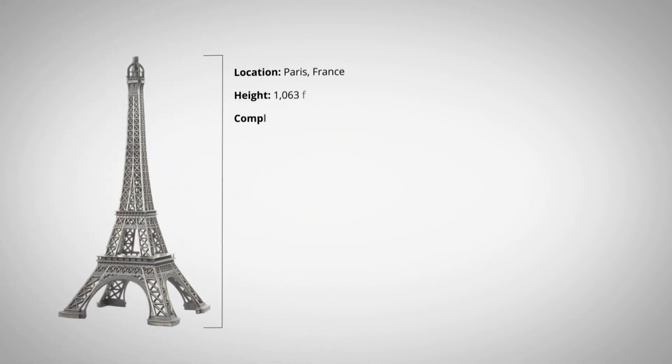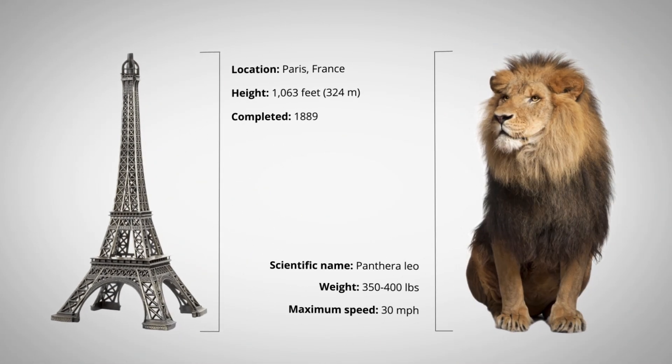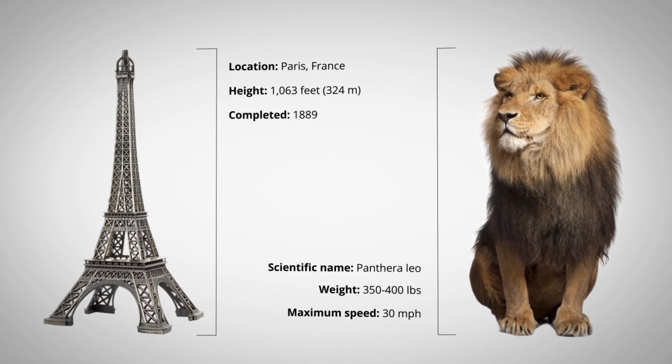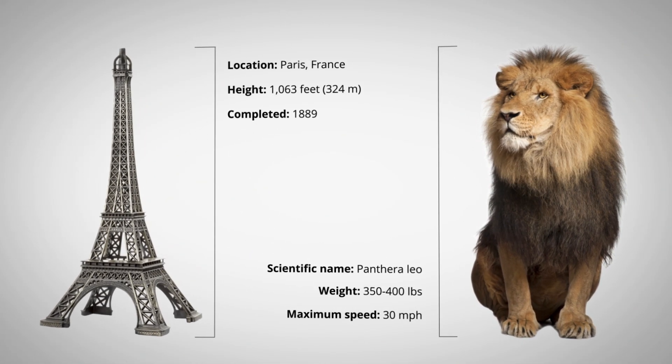Wouldn't it be amazing if Google could understand that the words you use when you're doing a search, well, they aren't just words — they refer to real things in the world. That a building is a building, and an animal is an animal, and they're not just random strings of characters. If we can understand that those words are talking about real-world things, then we could do a better job of getting you just the content that you want off the web.